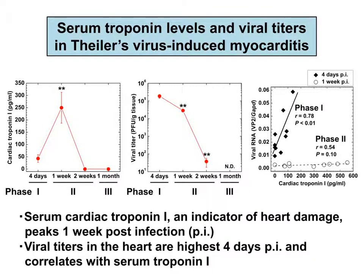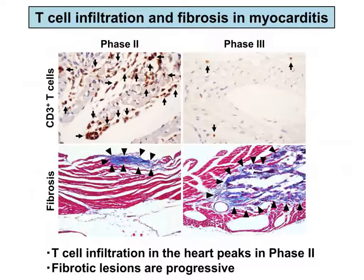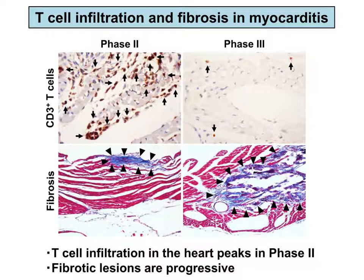The right panel shows that viral titers were correlated with troponin only in Phase I. In phases two and three, T-cell infiltration in the top panels and fibrosis in the bottom panels play a pathogenic role, respectively. T-cell infiltration peaked in Phase II, while fibrosis peaked in Phase III.